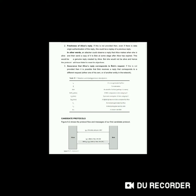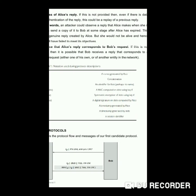Now we will see some of the notations. RB represents the nonce generated by Bob. MAC_K represents a MAC computed on the data using key K. E_K represents the symmetric encryption of the data using key K. TA represents the timestamp generated by Alice. TB represents a timestamp generated by Bob. IDS represents the session identifier.